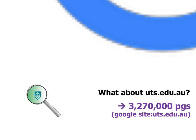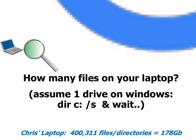Yes, there are actually 3 million pages on UTS's domain. That includes things like library books — you'll find a lot in lib.uts.edu.au — but also things like student websites at www.student.it.uts.edu.au. If you move to a more human scale, let's look at your laptops. On a Windows laptop, just type 'dir c:\ /s' and wait. On my laptop it turns out I have 400,000 files and 178 gigabytes of data — a lot of stuff, including Chrome cache, Windows OS files, student and UTS research data.